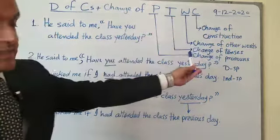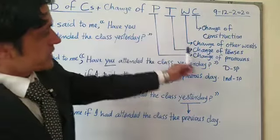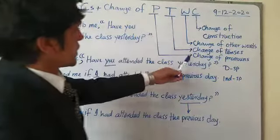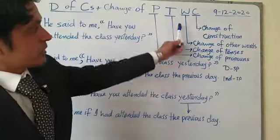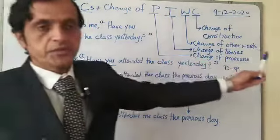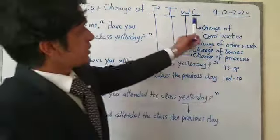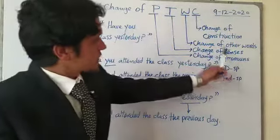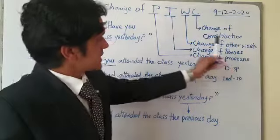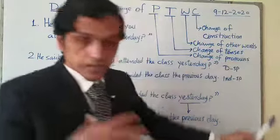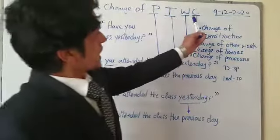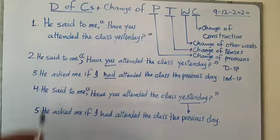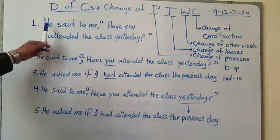Now let me explain what these acronyms mean. P represents change of pronouns, T represents change of tenses, W represents change of other words, and C represents change of construction. So: P = pronouns, T = tenses, W = other words, C = construction. Now let's see how you apply this formula.